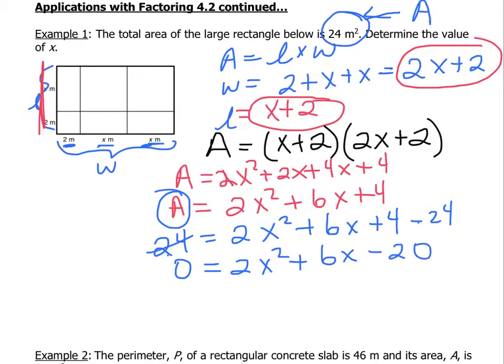Now we need to factor. So let's factor this. And we end up with 2 times (x minus 2) times (x plus 5). And our solution tells us that x is going to be either equal to 2 or x is going to be equal to minus 5.